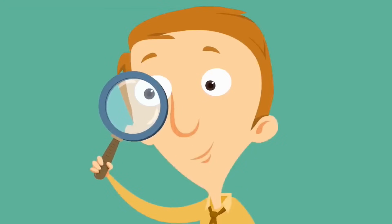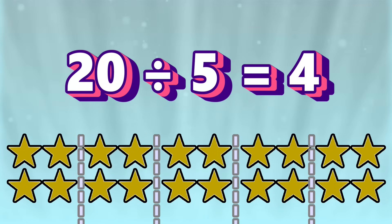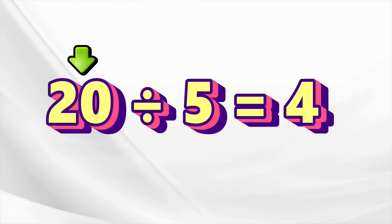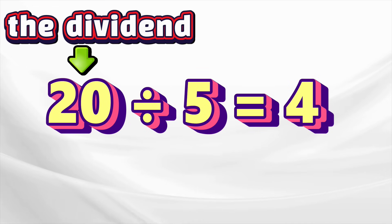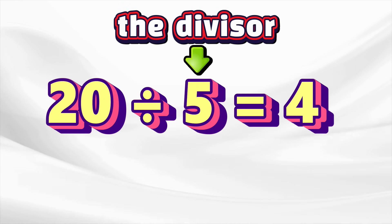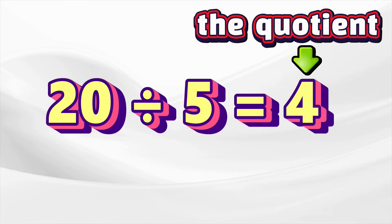Let's look at just one more division review problem. There are 20 star stickers, and five kids want to split them up evenly so everyone has the same amount. 20 divided by five equals four. Each kid would get four star stickers. 20 is the dividend — the total amount of star stickers you're splitting up. The number five is the divisor — the number of groups you are splitting the dividend into. And this four is the quotient — the answer to a division problem.